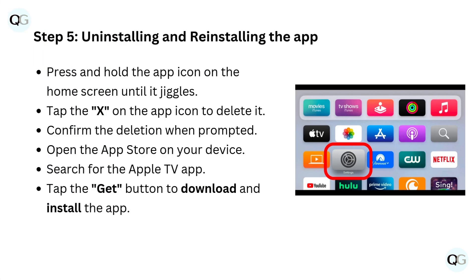Step 5: Uninstalling and reinstalling the app. Press and hold the app icon on the home screen until it jiggles. Tap the X on the app icon to delete it. Confirm the deletion when prompted. Open the App Store on your device, search for the Apple TV app, and tap the Get button to download and install the app.